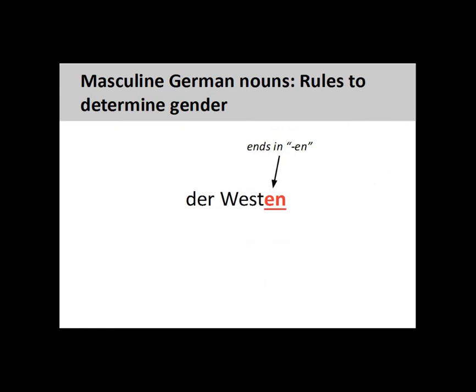Finally, most nouns ending in -EN, such as 'Westen' (the West), are masculine.